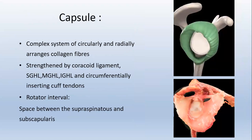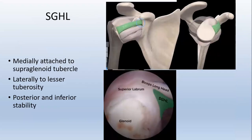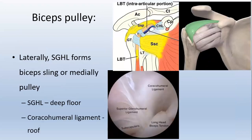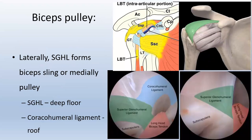The capsule is a complex system of circularly and radially arranged collagen fibers. It is strengthened by the coracohumeral ligament, superior glenohumeral ligament, middle glenohumeral ligament, and inferior glenohumeral ligament, with circumferential insertion through the cuff tendons. The space between supraspinatus and subscapularis constitutes the rotator interval. The superior glenohumeral ligament is attached medially to the supraglenoid tubercle and laterally to the lesser tuberosity. Laterally, it forms the biceps pulley, where the deep floor is formed by the SGHL and the roof is formed by the coracohumeral ligament.